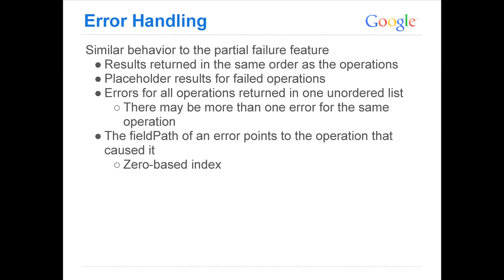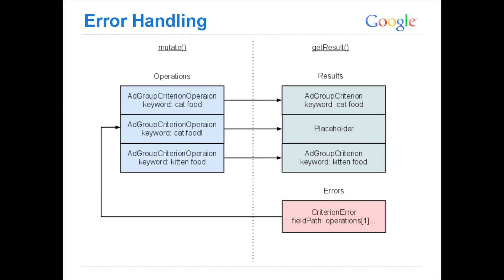The error handling here, we've tried to make it more similar to partial failure. You get your results back and they're in the exact same order as the operations that you sent in. But in places where there was a failure, you're going to get back a placeholder object which has no data. All of the errors for the entire job are then included in a separate array also in the response. And you have to use the field path of the errors to correlate which operation caused that error. To show you what this looks like graphically, here we made a very small job of only three operations passing in some keywords. The second keyword — 'cat food!' with a bang — failed because you can't use an exclamation point in a keyword. So the results that came back: we got one actual ad group criterion at the top, then a placeholder which contains no data, and then the third one is another ad group criterion. And the field path of the error references operation one. That's how you can tie these together.